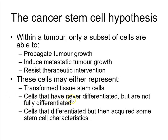Alternatively, cancer stem cells might represent cells that have never fully differentiated — somewhere between the stem cell and the differentiated cell. Or they could be cells that differentiated but then reversed and undergone phenotypic plasticity to de-differentiate and acquire stem cell characteristics. There is evidence that in different tumour types all three of these possibilities may well be true.